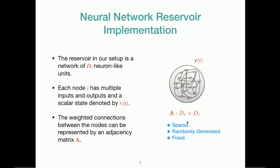And the important things to note about this matrix are that it is sparse, it will be randomly generated, and it will be fixed. So we will not be training the weights using the data unlike some other implementations of recurrent neural networks.